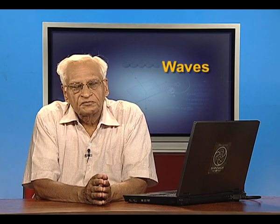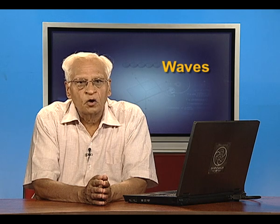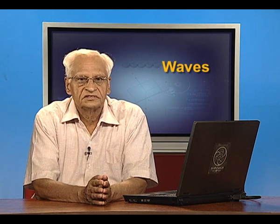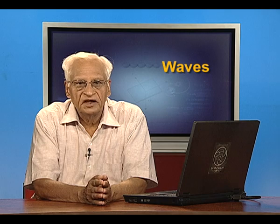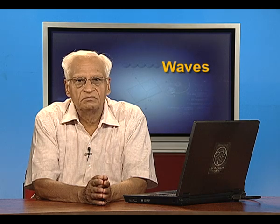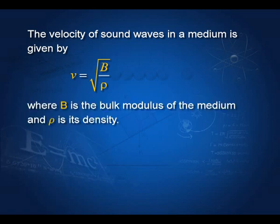Sound waves are longitudinal waves, and the velocity of such waves in a medium is given by V equal to the square root of B by rho, where B is the bulk modulus of the medium and rho is the density of the medium.